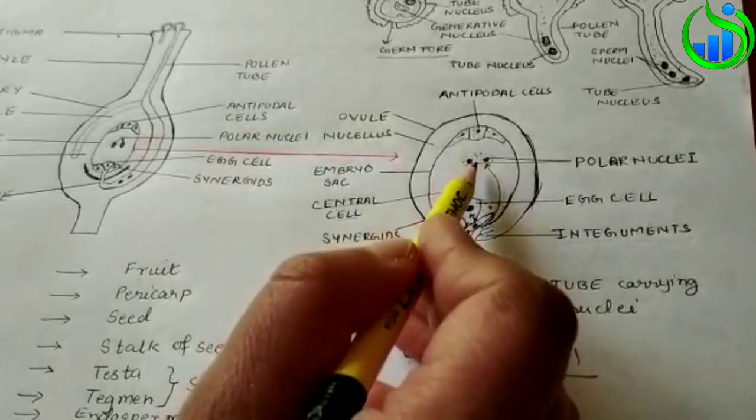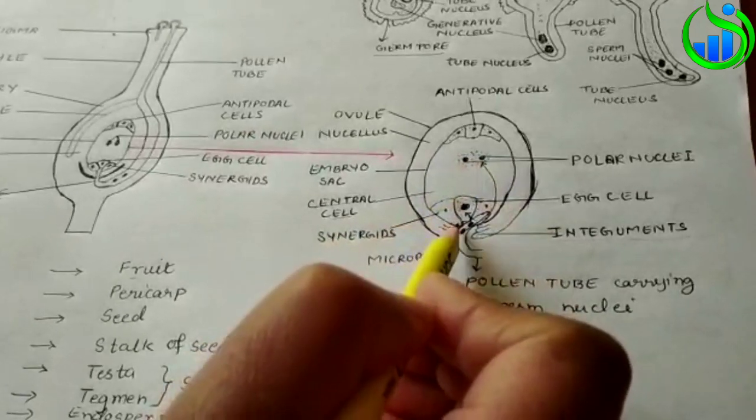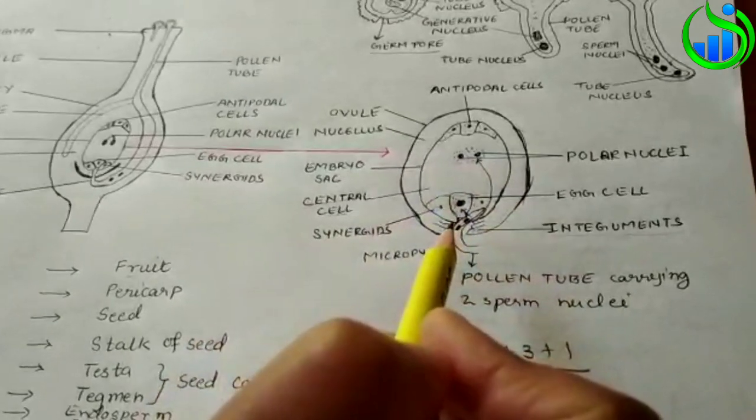So we have triple fusion and we have double fertilization in this process.